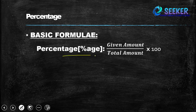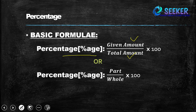There are some basic formulas which can be used in order to find the percentage. The simple formula is: percentage equals given amount divided by total amount, multiplied by 100. There is also another formula: percentage equals part divided by whole, multiplied by 100.